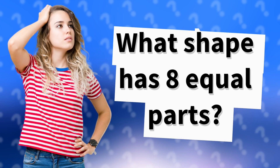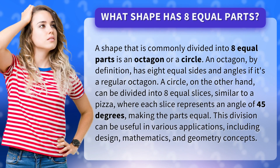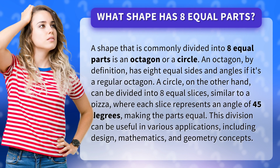What shape has eight equal parts? A shape that is commonly divided into eight equal parts is an octagon or a circle. An octagon, by definition, has eight equal sides and angles if it's a regular octagon.